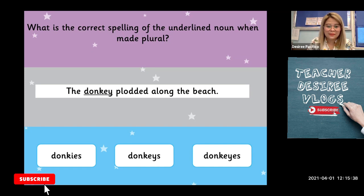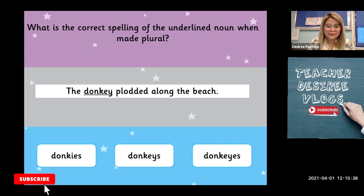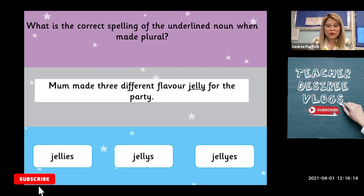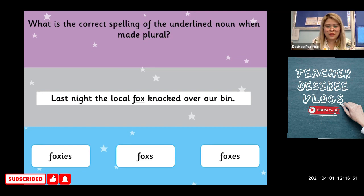Make sure to look at the ending letter of our word. Which do you think is the correct spelling? Third sentence: Mom made three different flavor words of jelly for the party. Our underlined word is jelly. Here are the three choices — which do you think is the correct answer? Last night, the local fox knocked over our bin. The underlined noun is fox.